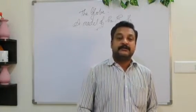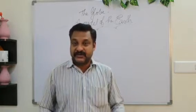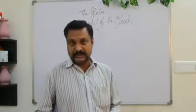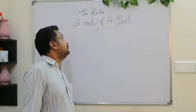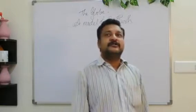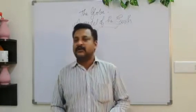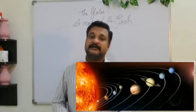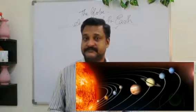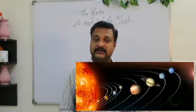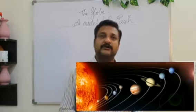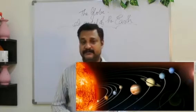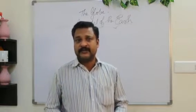Good morning children. It's time to start with the studies. In social science today we are going to learn about the globe, a model of the Earth. In the previous classes we have learned a lot about our Earth. Our Earth is the fifth largest planet in the solar system. Our Earth is the third nearest planet to the Sun. Our Earth is the only planet in this solar system which supports life.